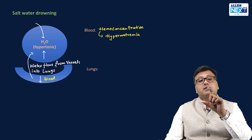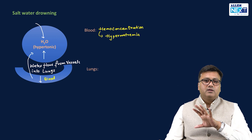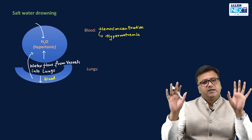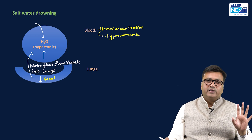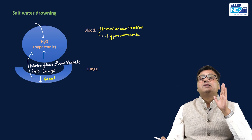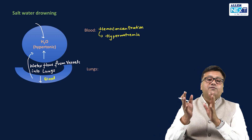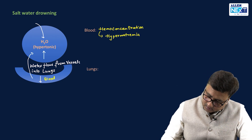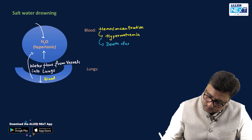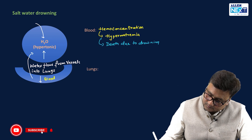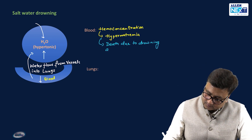These people die solely of drowning asphyxia, not because of any cardiac arrhythmia as seen in fresh water drowning. Their mean survival is a little longer — five to eight minutes. Death is due to drowning asphyxia, with mean survival of five to eight minutes.